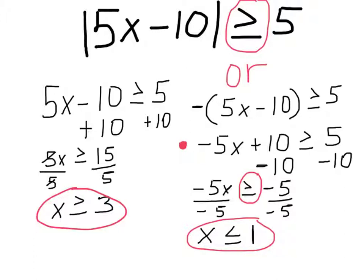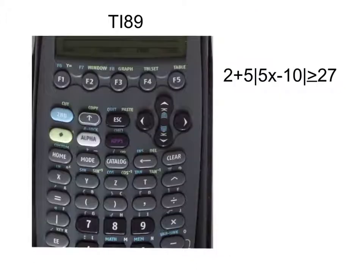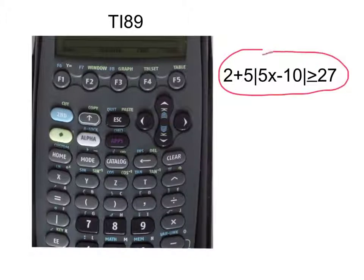So the answer to this problem is X is greater than or equal to three, or X is less than or equal to one. Now let's take a look at how we do this on the TI-89 calculator. Our original inequality was two plus five times the absolute value of 5X minus 10 is greater than or equal to 27.